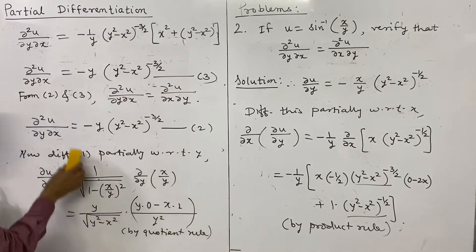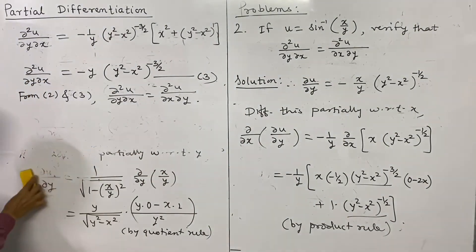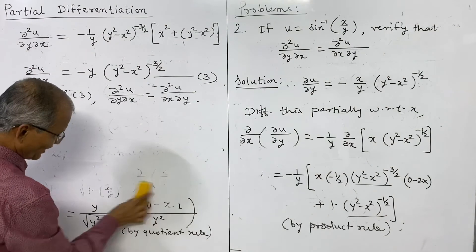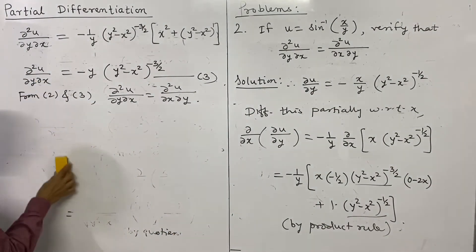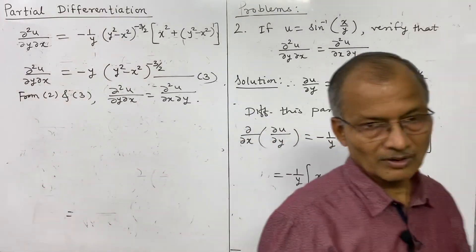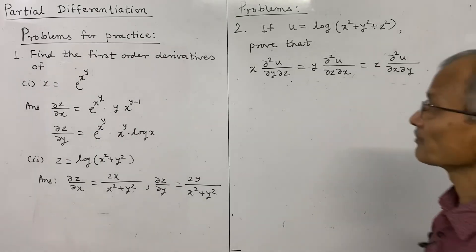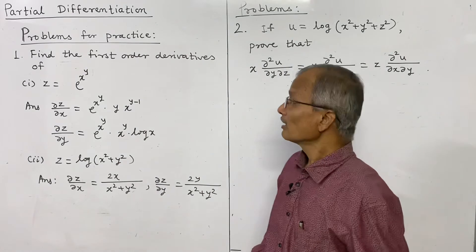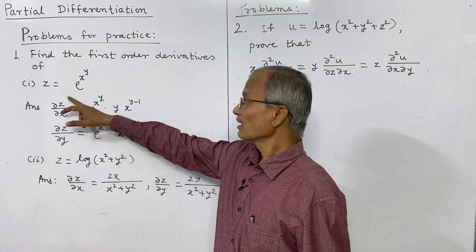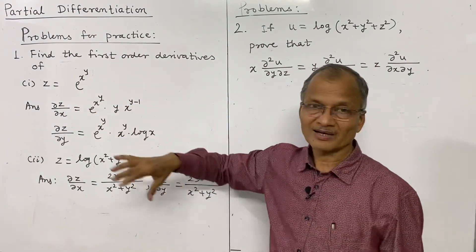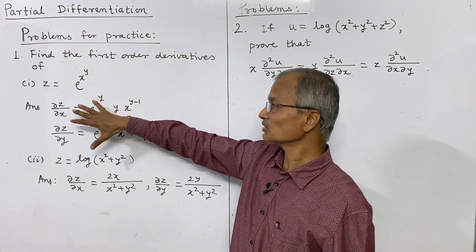From equations (2) and (3), ∂²u/∂y∂x = ∂²u/∂x∂y = −y(y² − x²)^(−3/2), and this completes the verification. In general these derivatives are equal. Now you should solve some problems of this type at home. For practice: find the first order derivatives of z = e^(x^y).